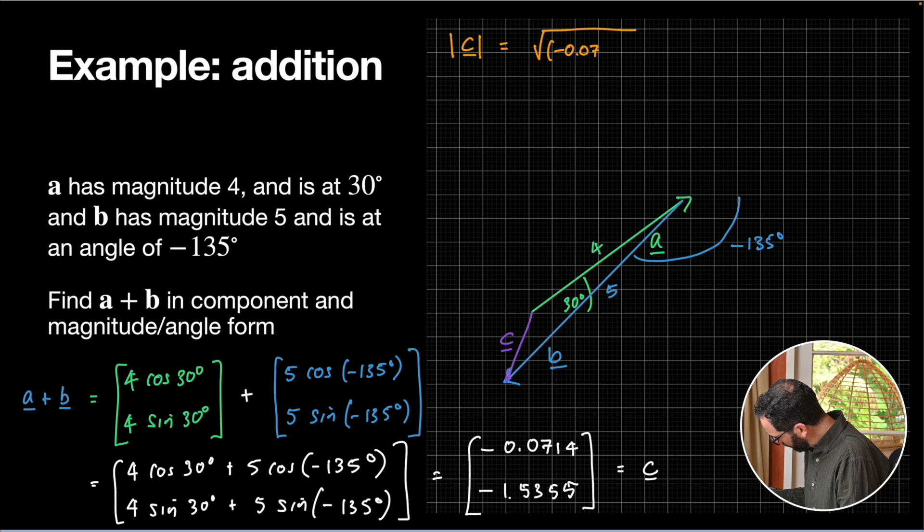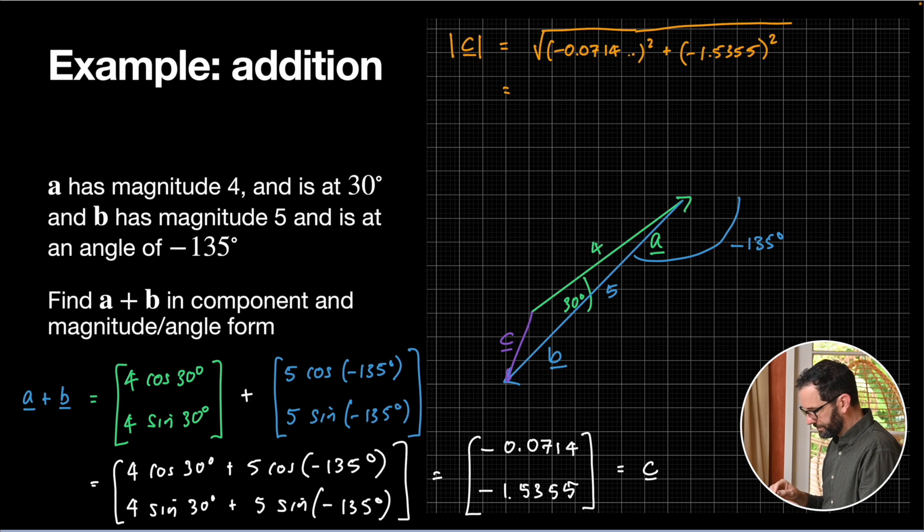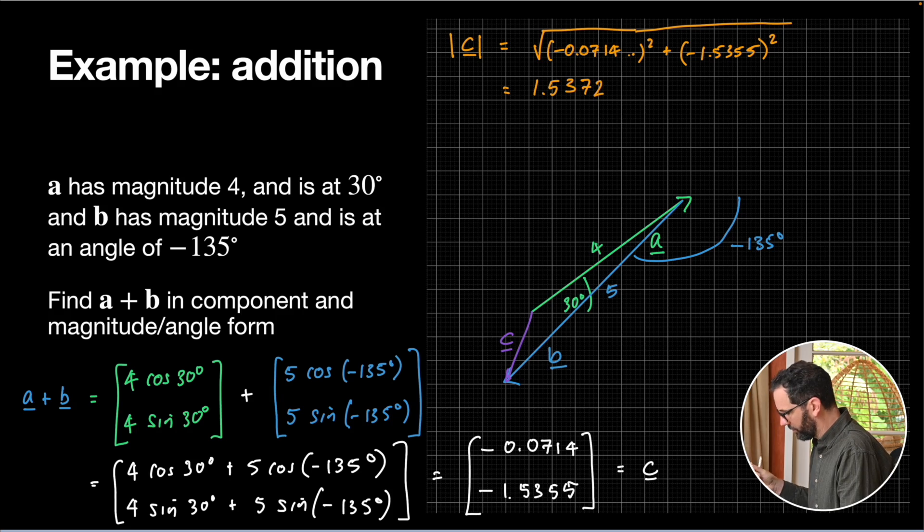Plus negative 1.5355 squared. Those negative signs will just square themselves away. So let's go square root, open a bracket, 0.0714 squared plus 1.5355 squared. Close the bracket, hit the equals button. Gives me a magnitude of 1.5372 approximately.